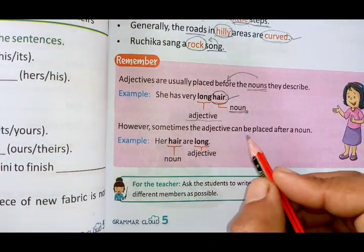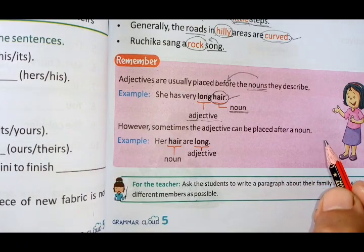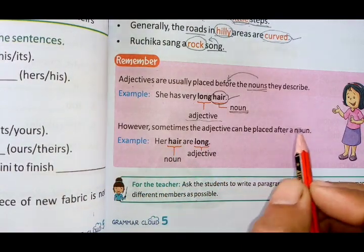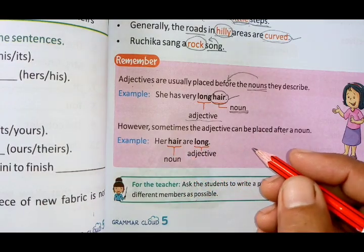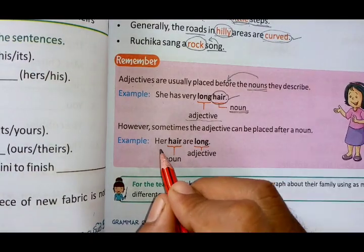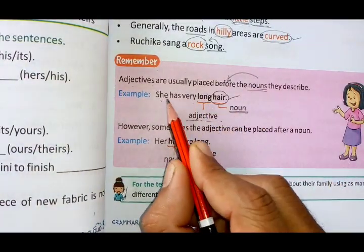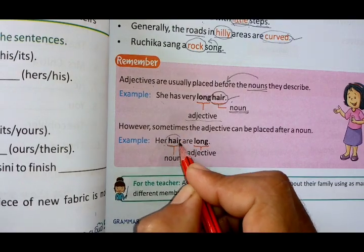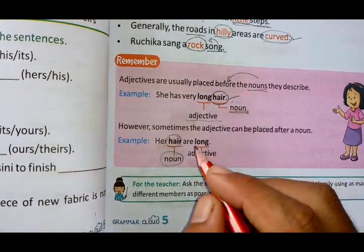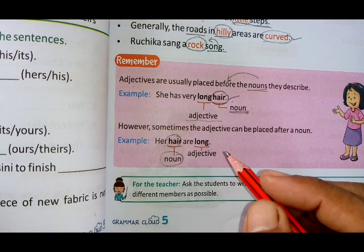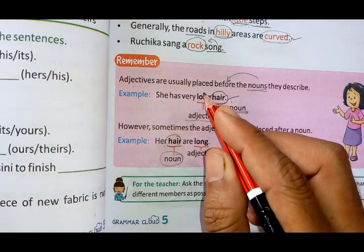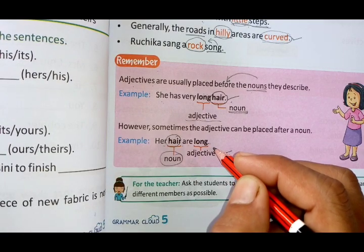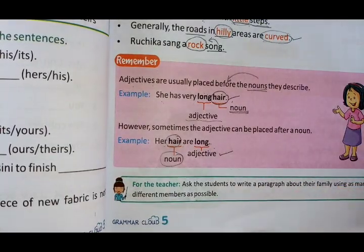However, sometimes adjectives can be placed after a noun. For example: 'Her hair are long.' Here the adjective 'long' comes after the noun 'hair.' Whether we say 'she has very long hair' or 'her hair are long,' in both cases 'long' is an adjective. It depends on the position of the word — where and how it is being used.